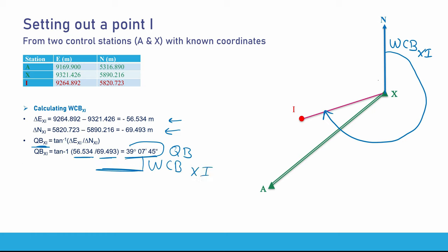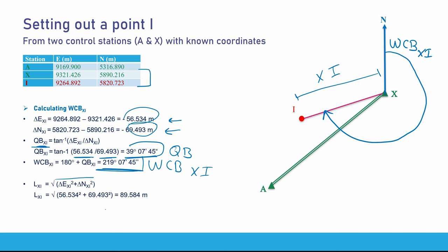You also need the distance between X and I to set out point I. Since we have the coordinates of both X and I, we use the relation: distance equals the square root of delta E squared plus delta N squared. The length of XI is the square root of 56.534 squared plus 69.493 squared, giving 89.584 meters. This is the length between known station X and the unknown point I that we are going to set out.